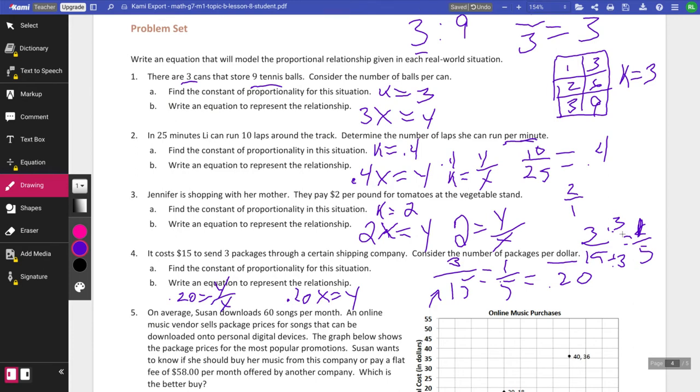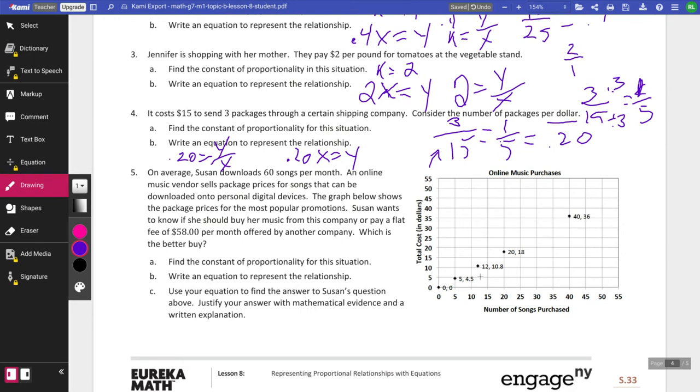On average, Susan downloads 60 songs per month. An online music vendor sells package prices for songs that can be downloaded onto personal digital devices. The graph below shows the package prices for the most popular promotions. Susan wants to know if she should buy her music from this company or pay a flat rate of $58 per month offered by another company. Which is the better buy? Well, first, let's take a look at how much she's paying currently.